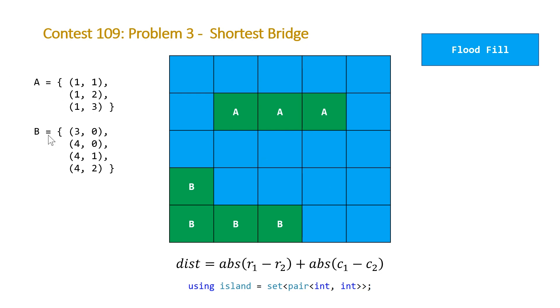You end up with this. Now we have two data structures, A and B, that represent all the points in each of our islands. Now we can just plug this formula in here and note that the two elements are this one here, 1, 1, and this one here, 3, 0.